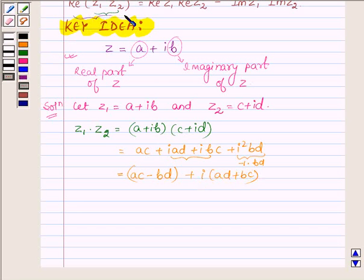the real part of Z1 times Z2 will be AC minus BD. Let this be equation number 1.